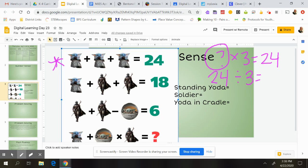And then I know that 8 goes into 24, and 8 times 3 is 24. So I would put an 8 here. So that means that our Standing Yodas are all 8. So then I can come here and plug this in.